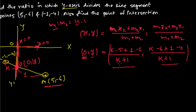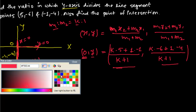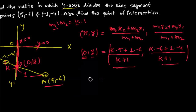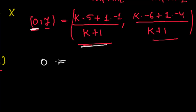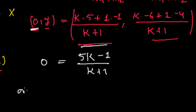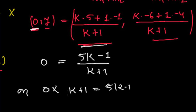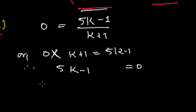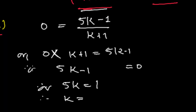Now let me equate the x-coordinate part. The x-coordinate is 5k minus 1 divided by k plus 1, and this equals 0. So 0 times k plus 1 equals 5k minus 1, which gives 5k minus 1 equals 0. Therefore 5k equals 1, so k equals 1 upon 5. We got the value k = 1/5.